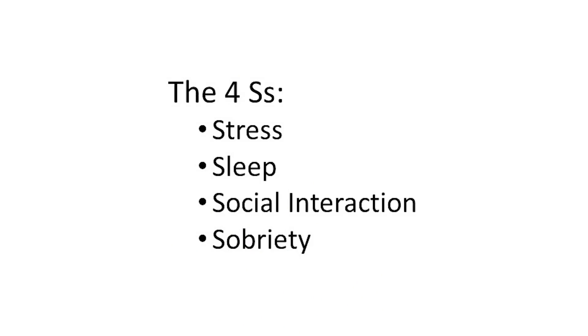This video will compare and contrast four management options that are very critical to preventing Alzheimer's. Even if you have my book, you need to watch this video to understand how they relate to each other. In the book, Alzheimer's is chapter 33. I like to call this the 4S method of Alzheimer's prevention. The 4Ss are stress, sleep, social interaction, and sobriety.